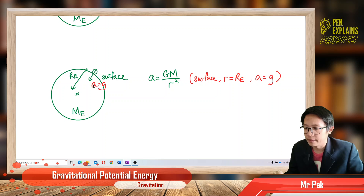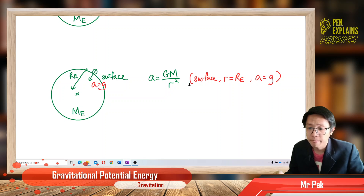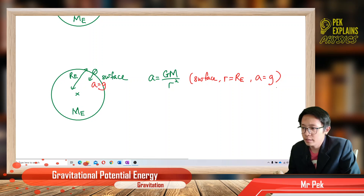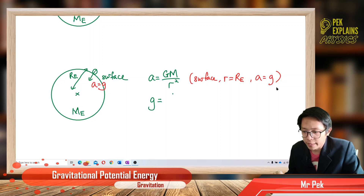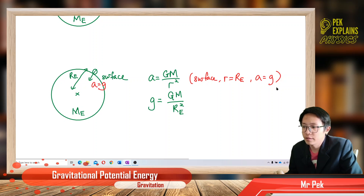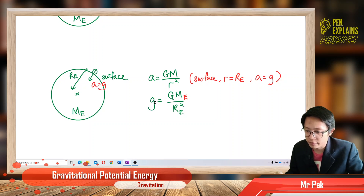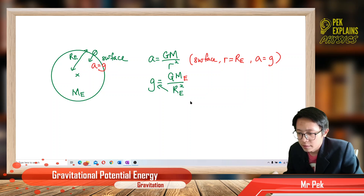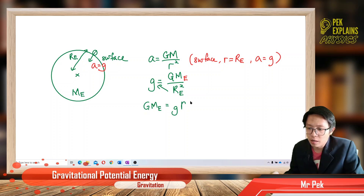For an object on the surface, the gravitational field strength g equals GM over r². On the surface, the radius is the radius of the Earth R_e, and the gravitational field strength is g. So we substitute: g = GM_e over R_e². Cross-multiplying gives GM_e = g R_e².